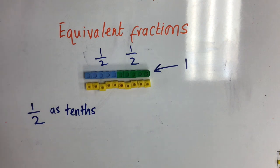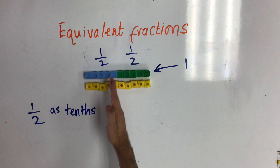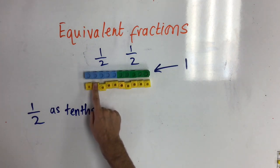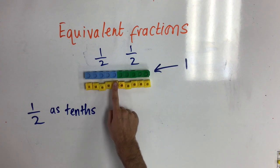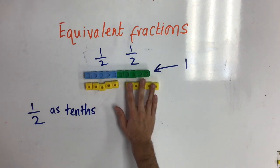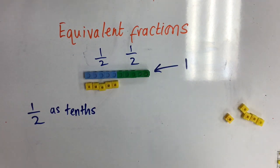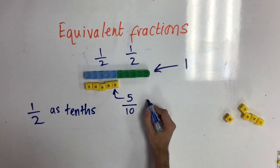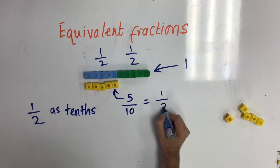To find out how many tenths is the same as one half, I just need to count how many there are on one side of my one. One, two, three, four, five. So I can see that five tenths are the same as one half.